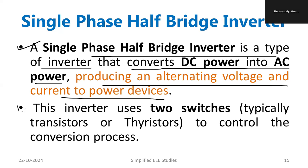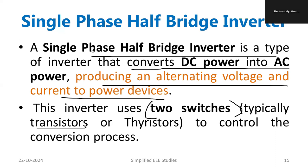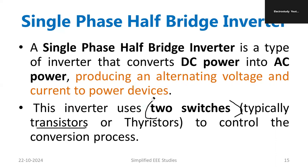The major components of half-bridge inverters are two power electronic switches, which can be transistors or thyristors — usually transistors are preferred. By using these switches the entire control process will take place. That is the brief introduction to the single-phase half-bridge inverter.